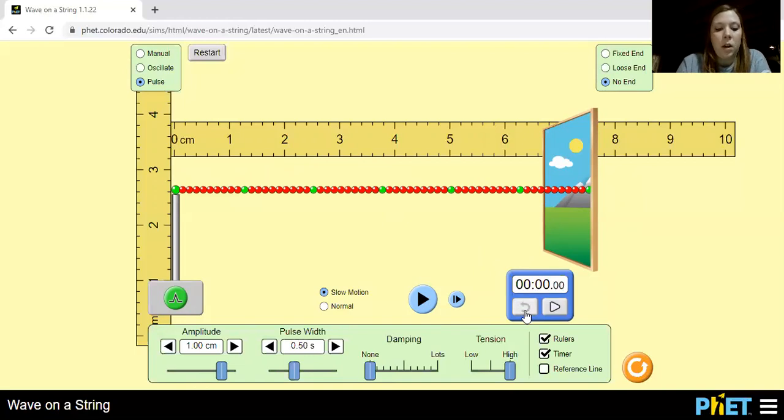Let's restart everything. And now we're going to go on to how does the pulse width affect the speed. So we're going to keep amplitude at 50. And pulse width we'll start at 25. Start the timer. Start the pulse. Just passed it. Start over. So the time is 0.59.